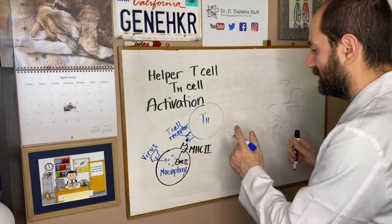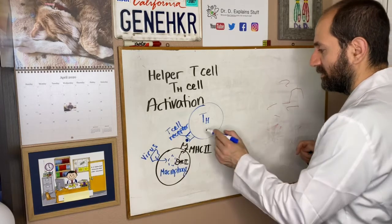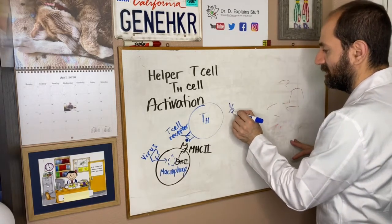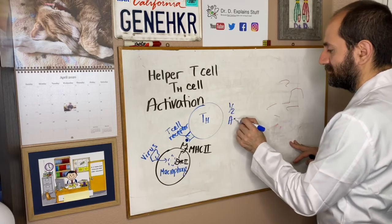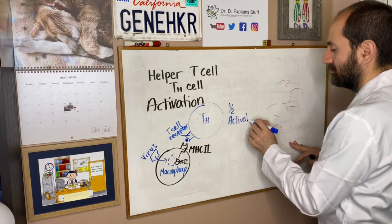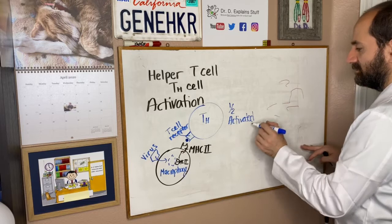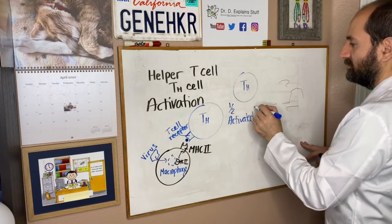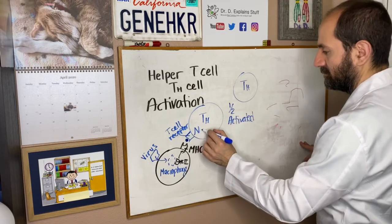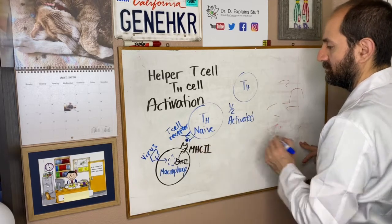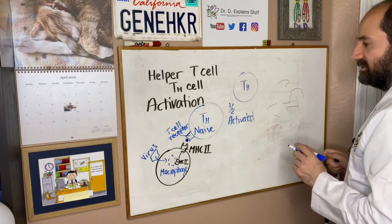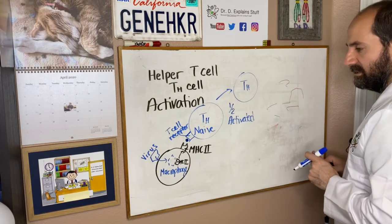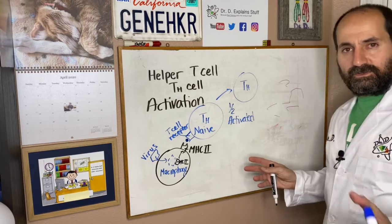So what happens? This T helper cell goes from a naive T helper cell to a halfway-activated cell. The T helper cell is no longer naive — it is now halfway activated. They call that sometimes the first handshake.